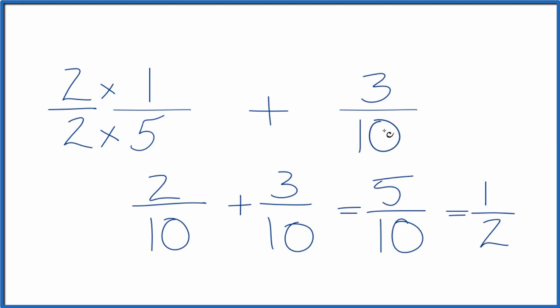So one-fifth plus three-tenths, that equals one-half in simplest terms, or you could say five-tenths. This is Dr. B. Thanks for watching.